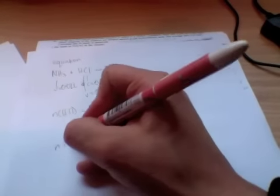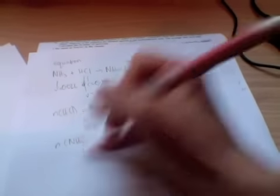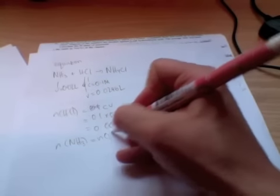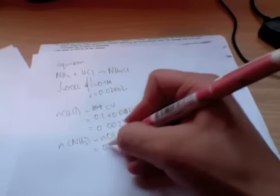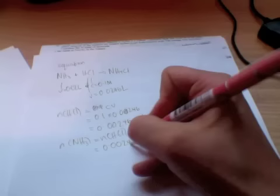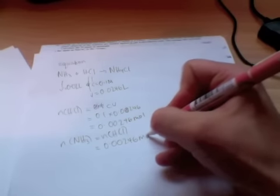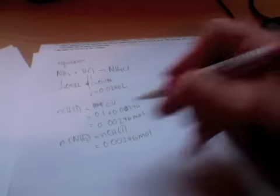Now, to work out our moles of NH3, we simply use stoichiometry. So it's a one-to-one ratio. So our moles equal 0.00246 mole.